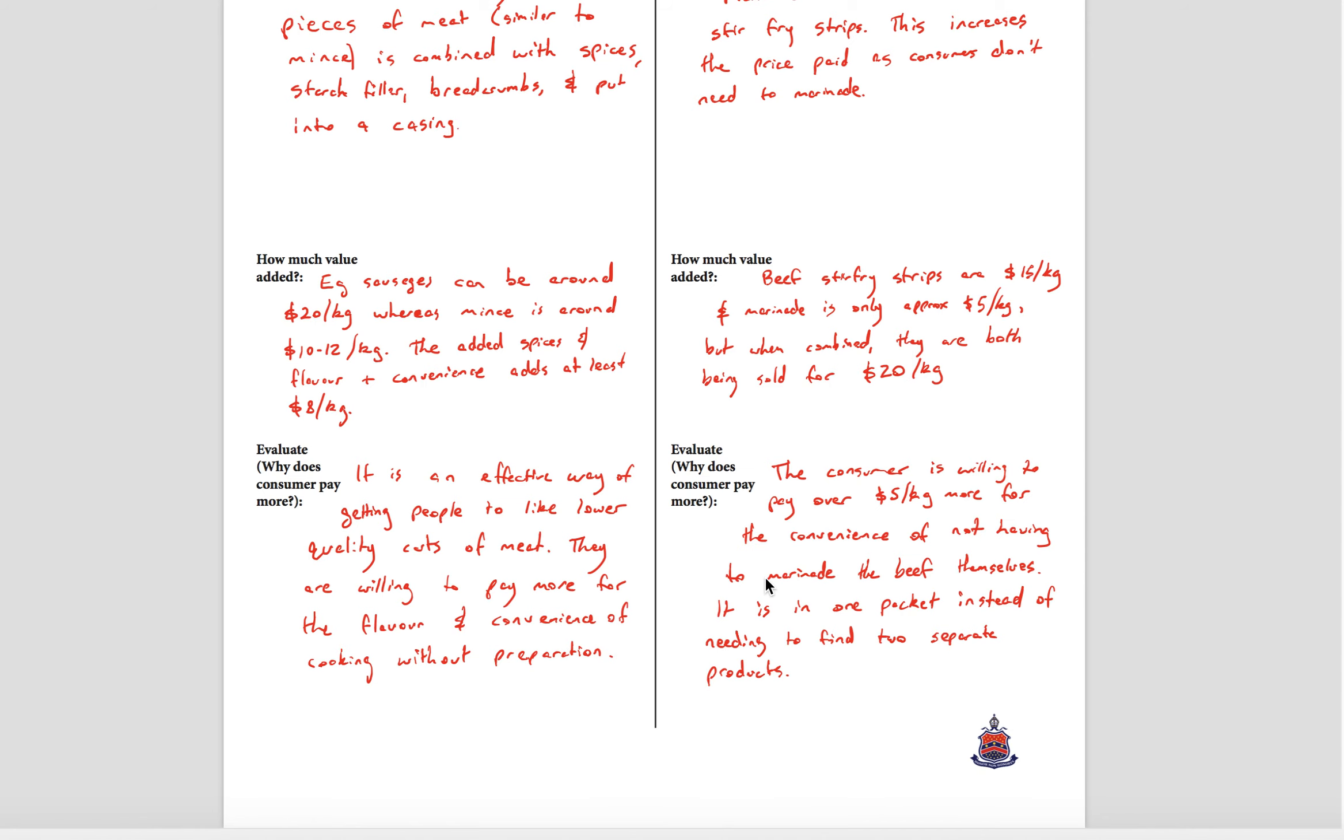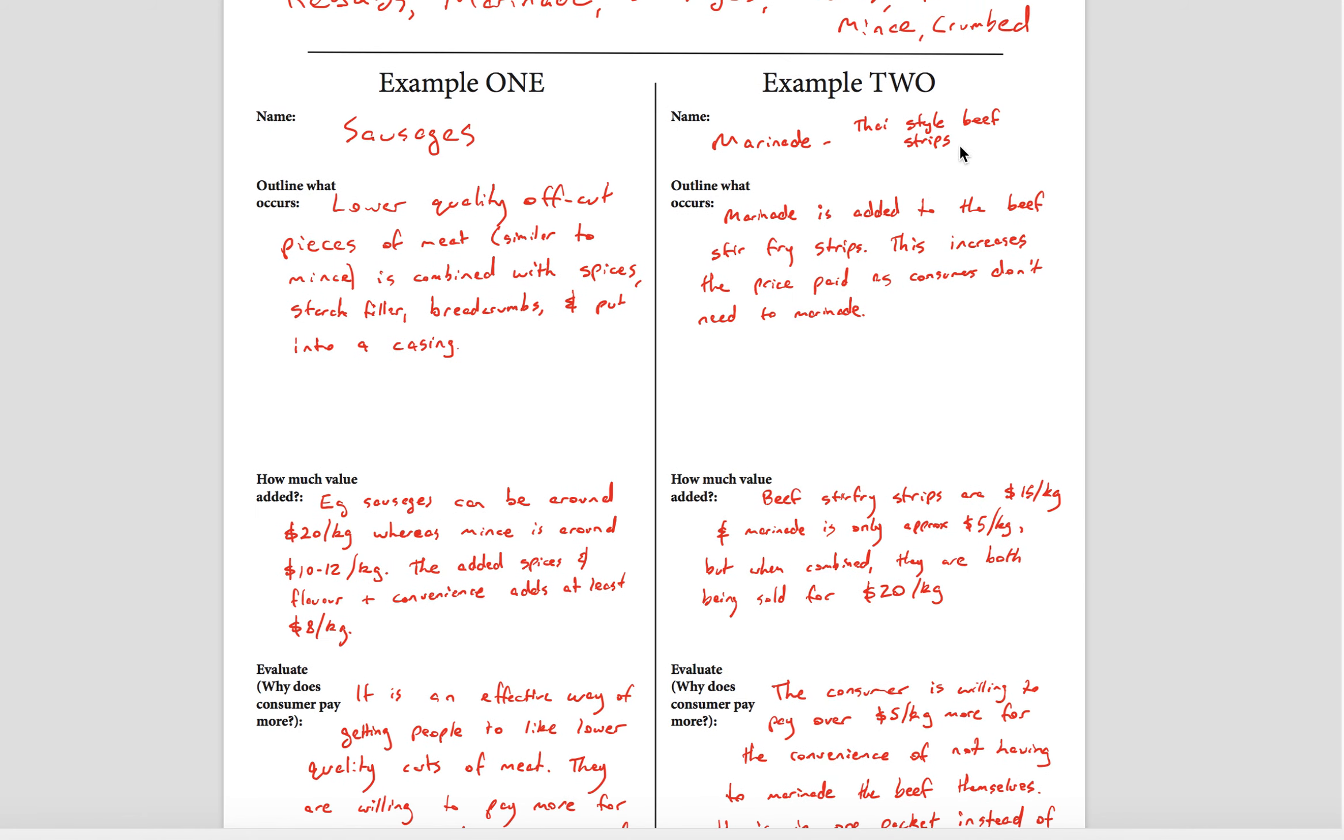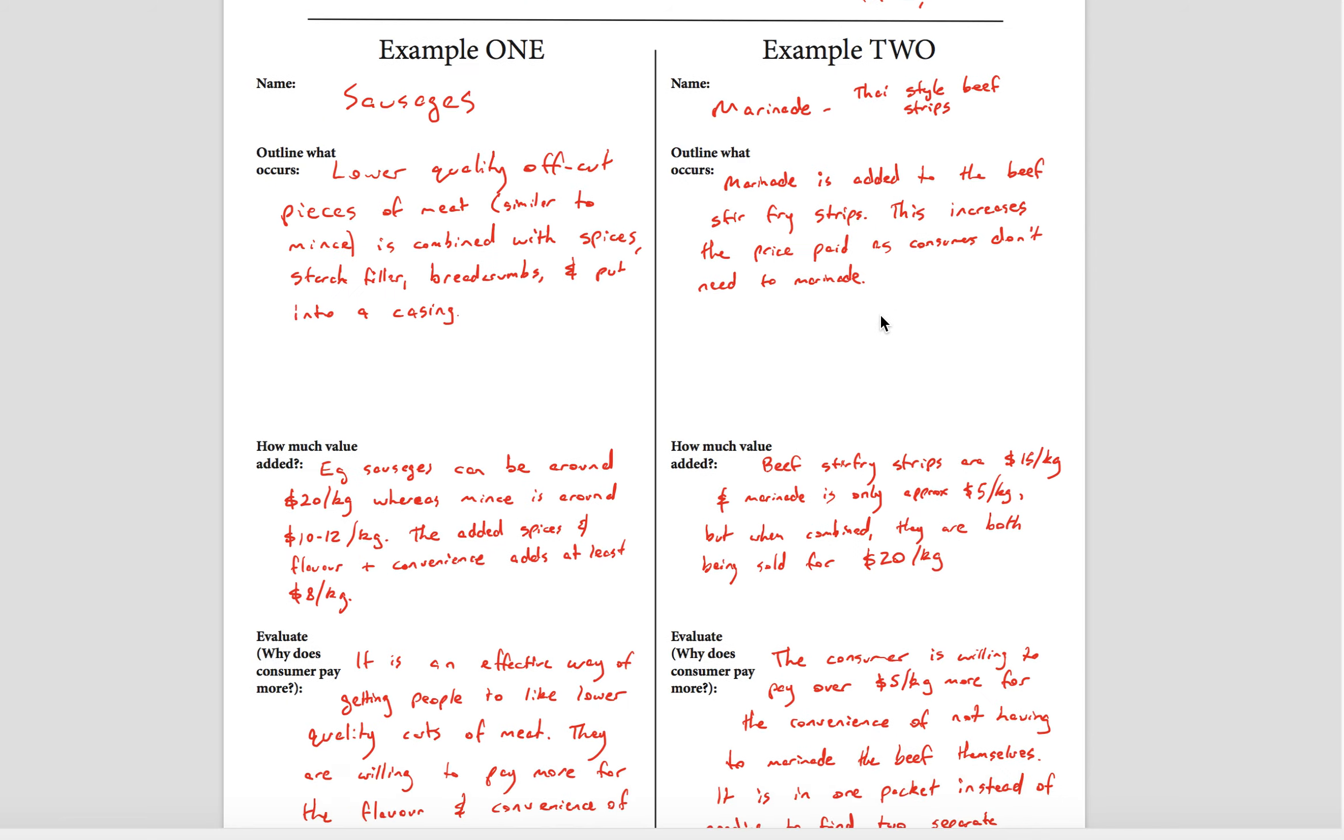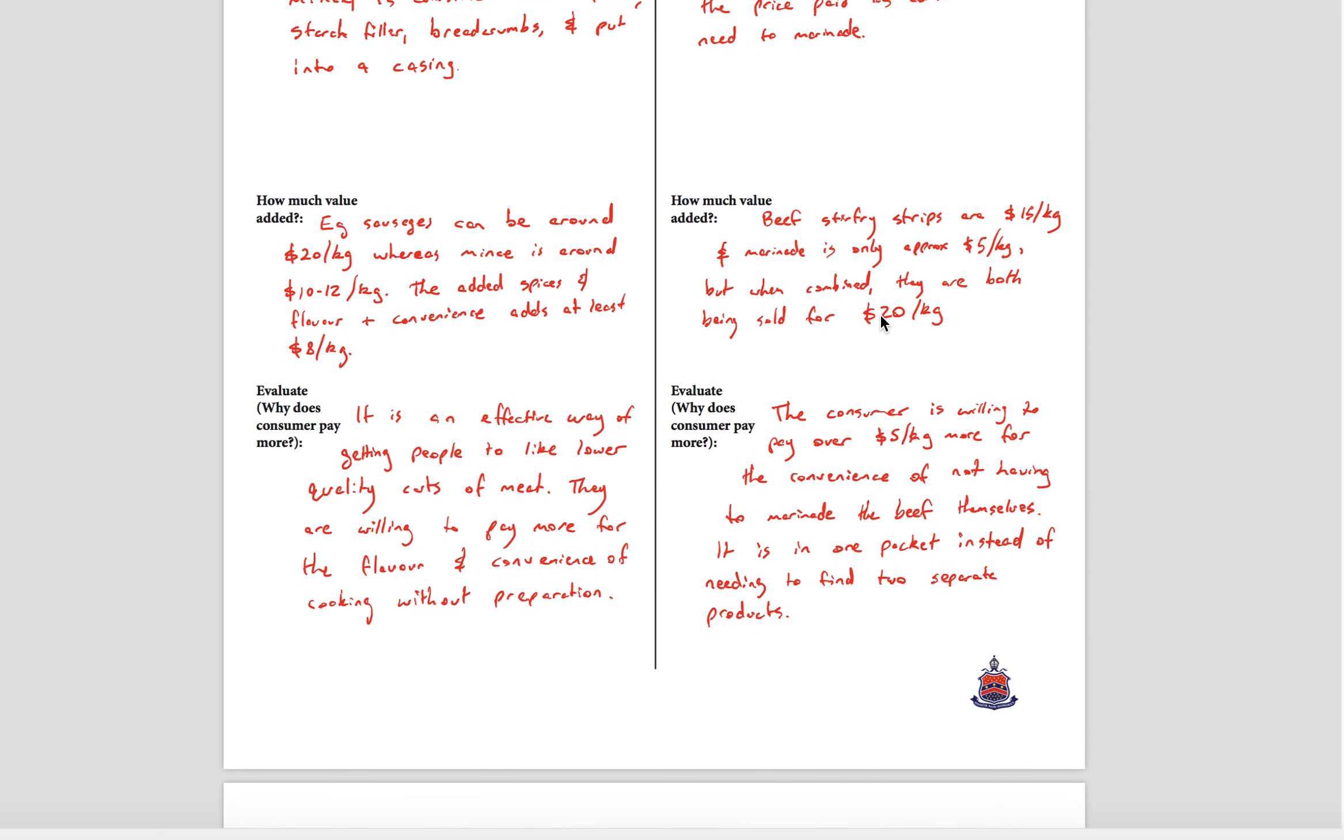The example here of marinade: I looked on the Woolies online shop and saw marinated beef, Thai style beef strips with Thai marinade on the beef in the packet that you buy. So marinades added to the beef stir-fry strips increases the price paid as consumers don't need to also buy marinade and then marinate the product.